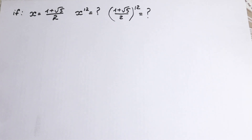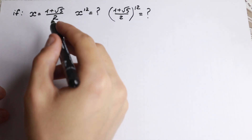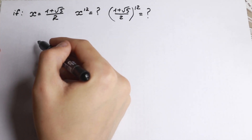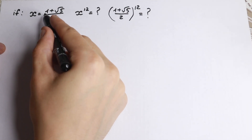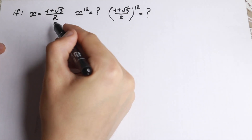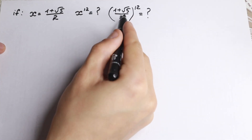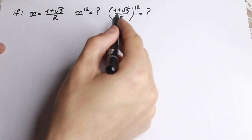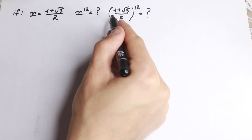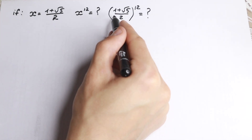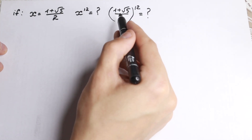Hello my friend, happy to see you here — really interesting problem today. We need to raise this expression to the 12th power. On the first side this looks easy because we have a constant, but what about this constant? We have a really good denominator equal to 2, so it's good to raise this to the 12th power, but what about this one? We cannot add it exactly, so we need a really good math trick.